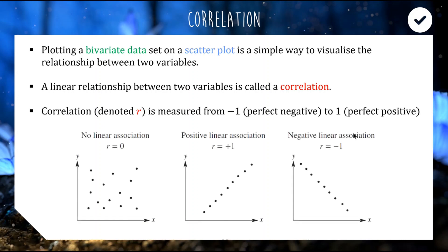If you had a data set that had no correlation — no clear sort of pattern or trend — you would have a correlation value of r equals zero. If you had a data set showing a perfectly straight line, a perfect positive correlation where increasing one always increases the other, you would have a correlation value of plus one.